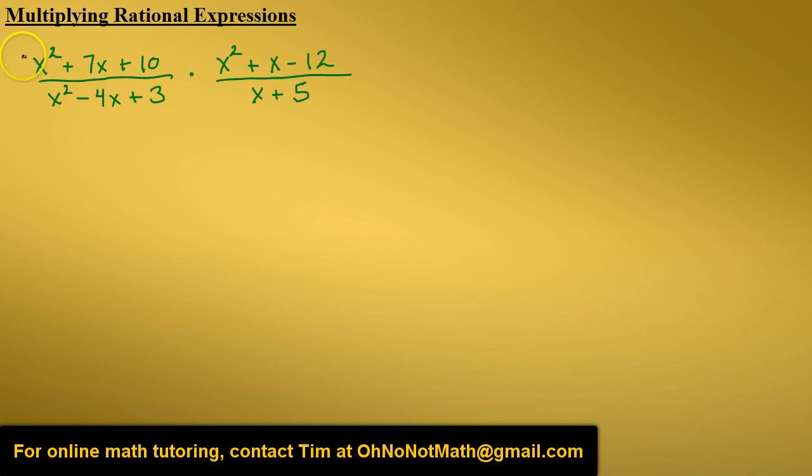The numerator is a trinomial with a leading coefficient of 1, so we know that it factors into the product of two binomials. The leading terms are going to be x, and we need two numbers that will multiply together to give us 10 and add together to give us 7. So that would be 5 and 2. 5 times 2 is 10, 5 plus 2 is 7. This positive sign tells us that the signs of both of these numbers are going to be the same. This positive sign tells us that they're going to be positive.